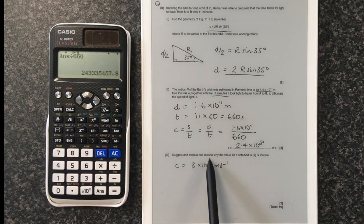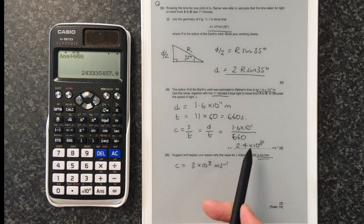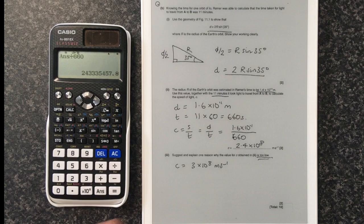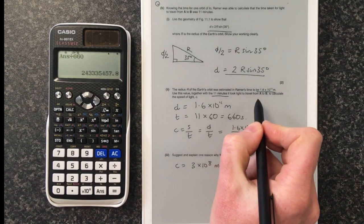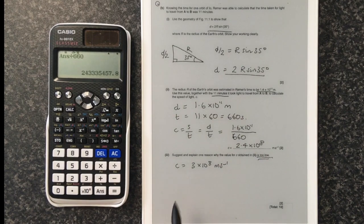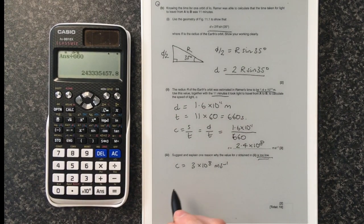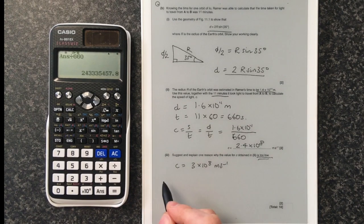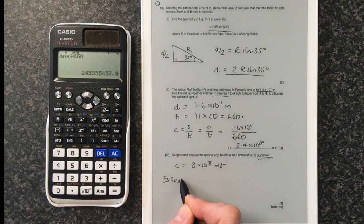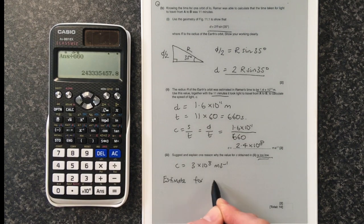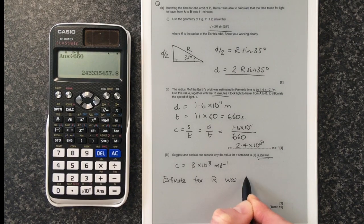In part 3, it suggests and explains one reason why the value for C is too low. Well, it is lower. Why? And it's going to be doing with the numbers that we've used. So one of the numbers we used was the radius of the Earth. So it's likely to say that that estimate was wrong. And for the number to be lower, it must have been that the estimate for R was too low.